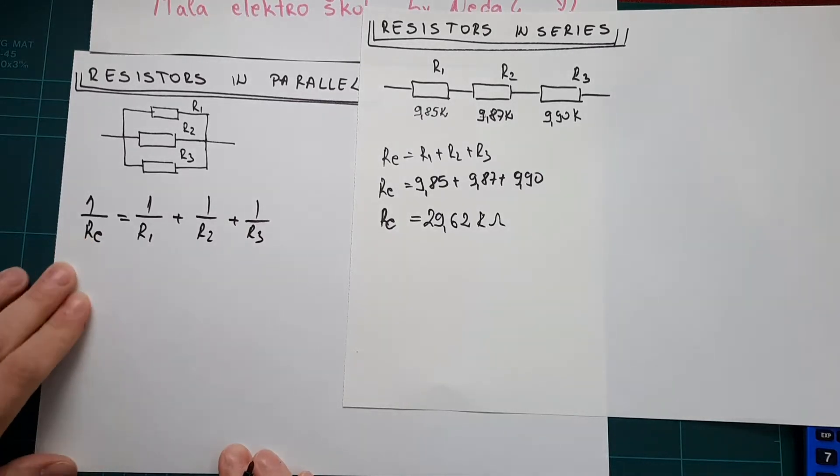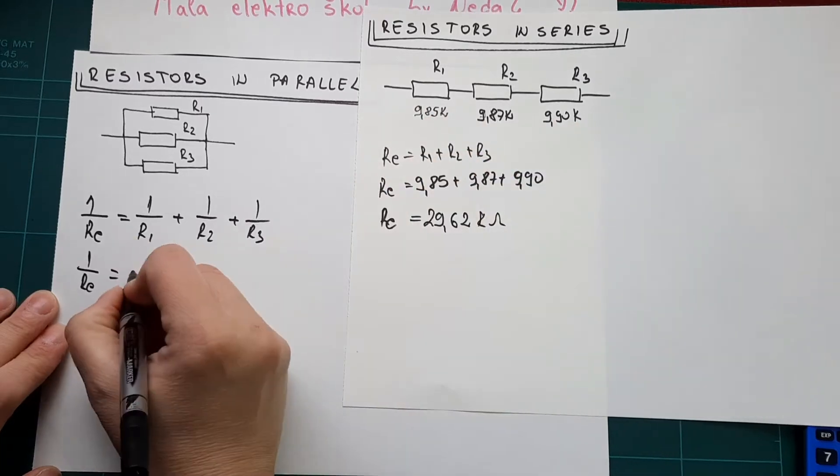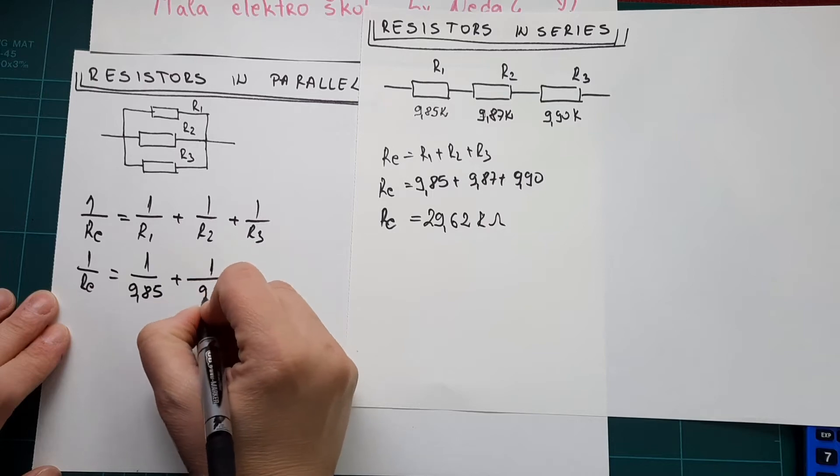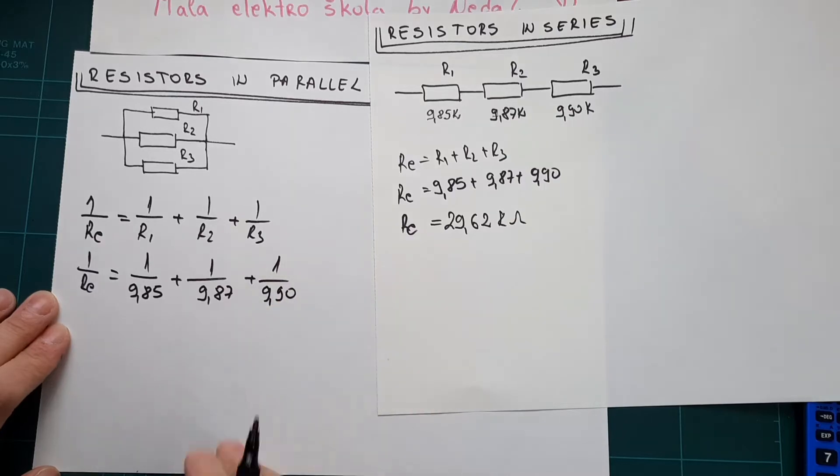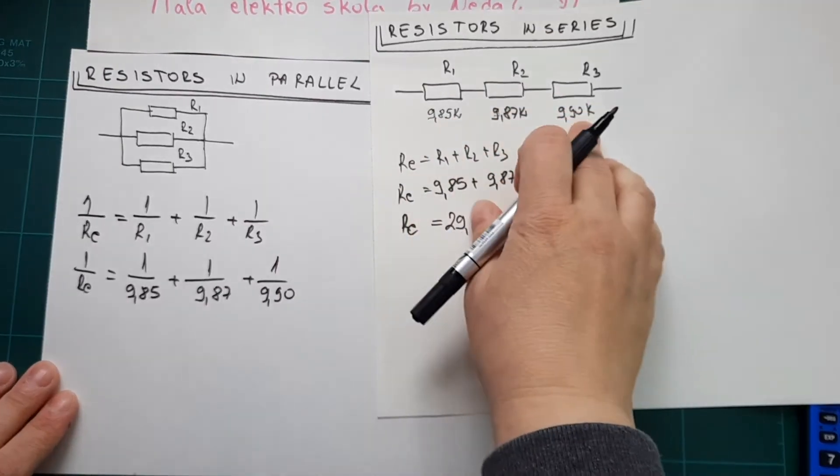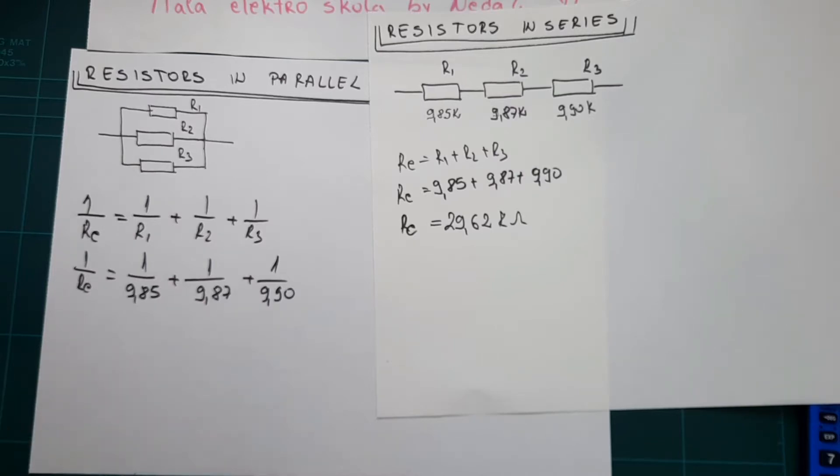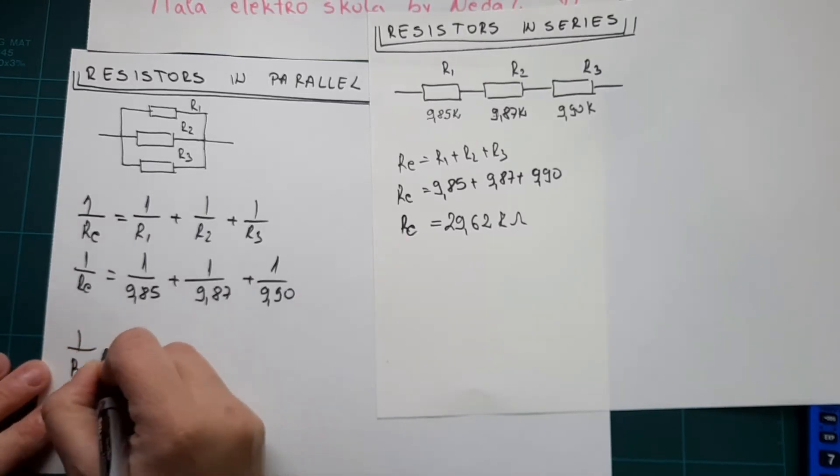We will write all these values. By doing this with different values, without making the same close values, we will have a little longer counting, but it will go and you will see how this goes.